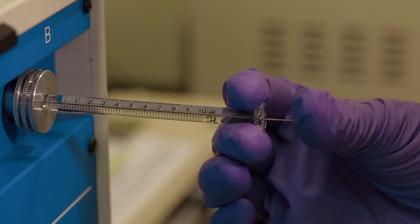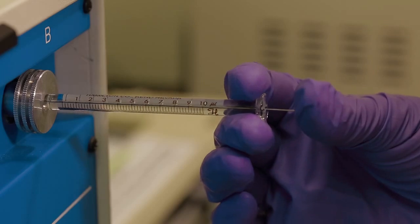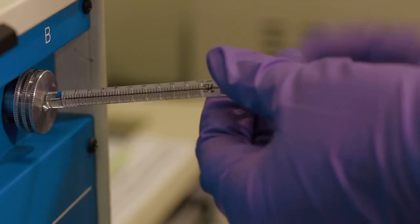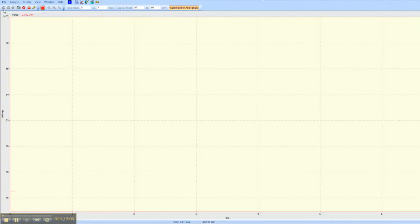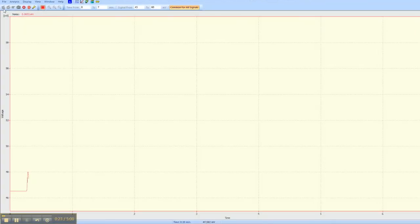When you inject your sample, make sure to promptly plunge the syringe without bending it. It is necessary to ensure that the entirety of the sample is injected at one time. Be patient since it may take a few minutes for the first peak to show.